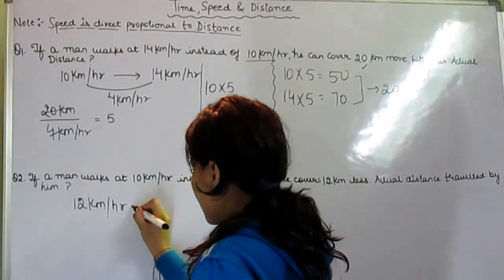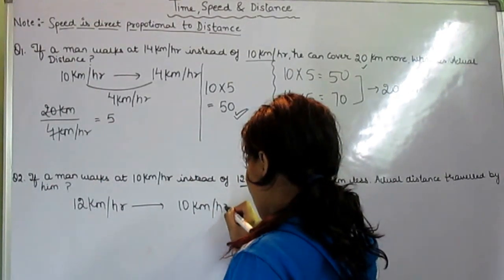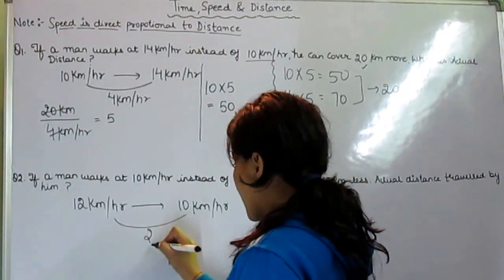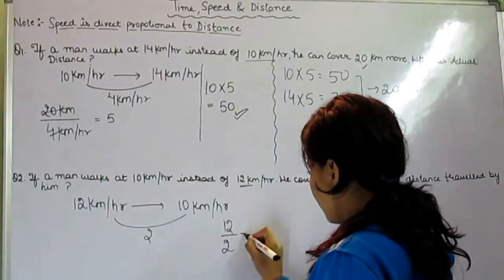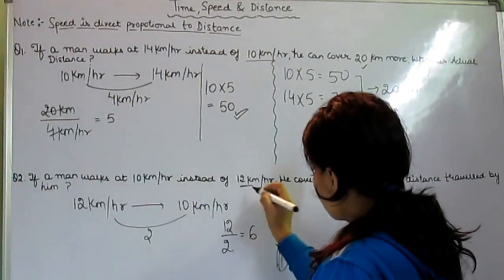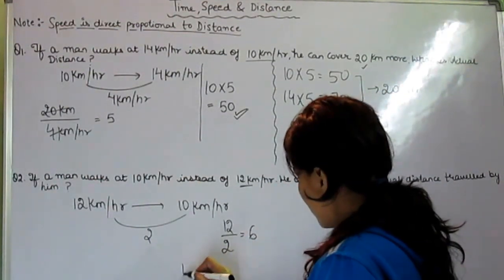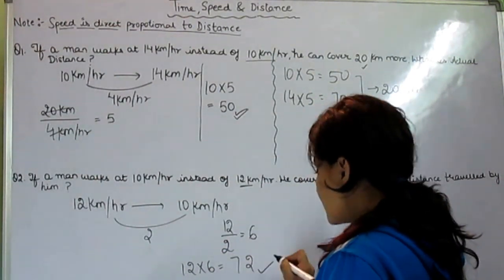Now he is going with the speed of 10 km per hour. What is the gap? Gap is 2 and we are given 12. So 12 divided by 2, that will be 6. What is the actual speed we are asked to get? Actual speed was 12. So 12 times 6, that is 72. This is the answer.